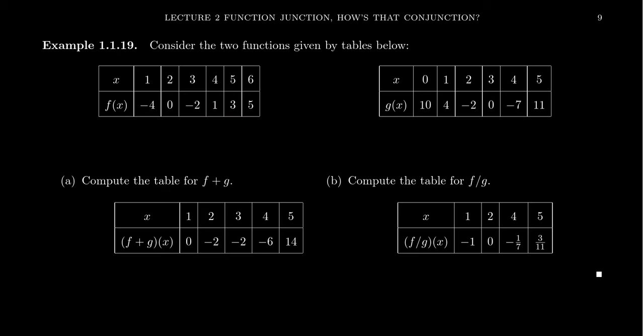And so let's look at an example of this if we focus on just two functions that are expressed numerically. So we have one function, f, whose domain is going to be the numbers 1, 2, 3, 4, 5, 6. And the associated y-coordinates are these numbers, which we can read from the table. We also have a function, g, illustrated right here. Its domain will be 0, 1, 2, 3, 4, 5. And the associated y-coordinates will be these six numbers you can see right there.